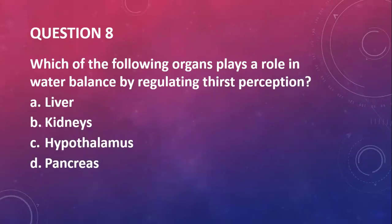Question eight: which of the following organs plays a role in water balance by regulating thirst perception? You have the liver, kidneys, hypothalamus, and pancreas. If you watched the video, you should be able to answer this. The answer is the hypothalamus, the thirst centers in the hypothalamus.